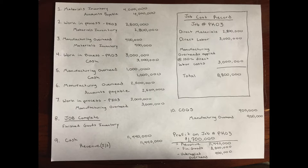Now that the job has been completed, the cost of PK03 is transferred from work in progress to finished goods on its completion at a total cost of $8.8 million. This equals the direct materials cost of $2 million plus direct labor costs of $3 million and applied manufacturing overheads of $3 million. Finished goods are debited $8.8 million and work in process is credited $8.8 million. Revenue is recorded at $11.44 million, which equals $8.8 million times 1.3, reflecting the 30% markup rate on the job.